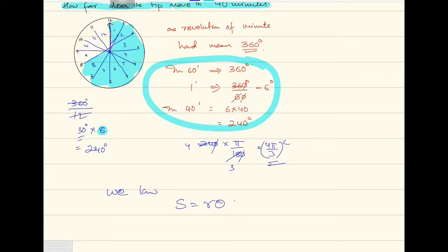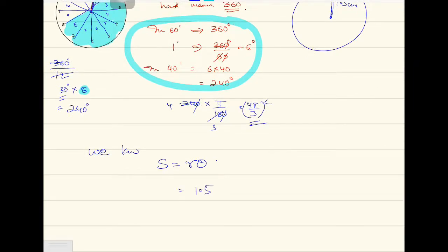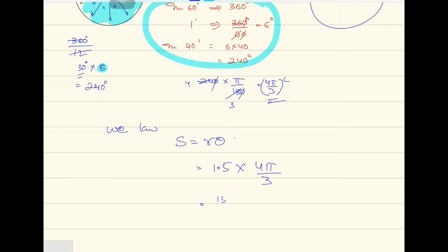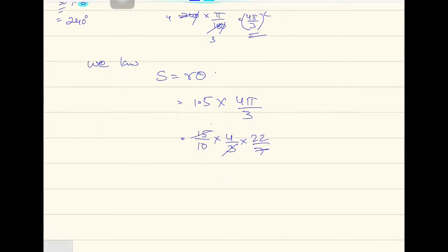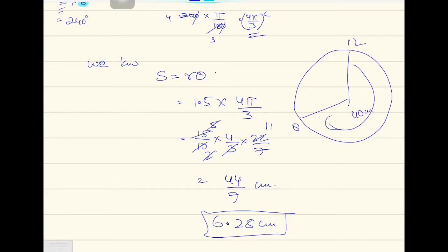Now using s equals r theta: radius is the length of the minute hand, which is 1.5 centimeters. So s equals 1.5 multiplied by 4 pi by 3. That is 15 by 10 into 4 by 3 into 22 by 7, which simplifies to 44 divided by 7 centimeters, giving 6.28 centimeters. That is the distance covered by the minute hand's tip — the arc from 12 to 8 — in 40 minutes.